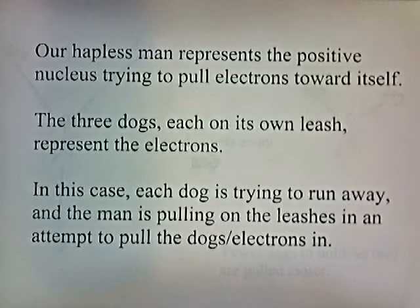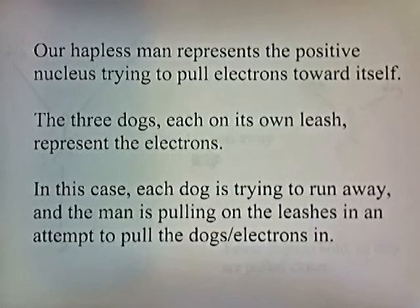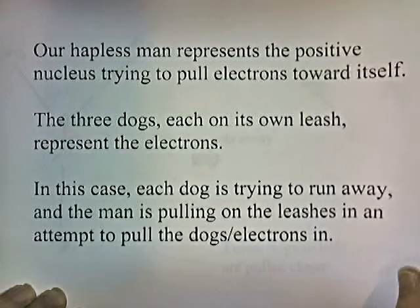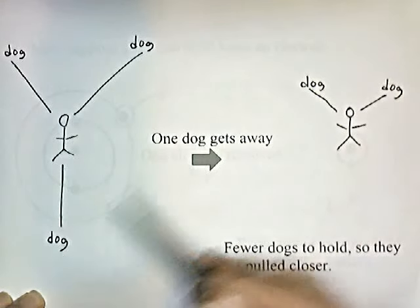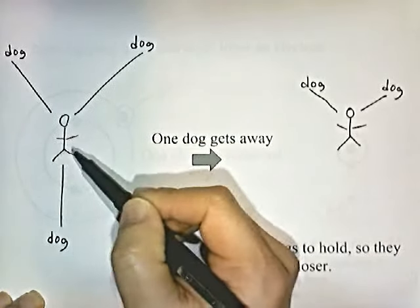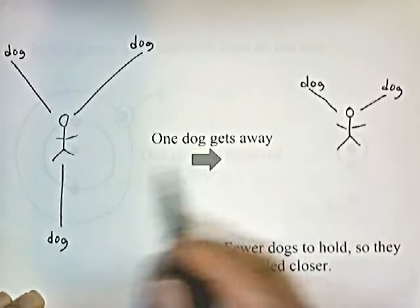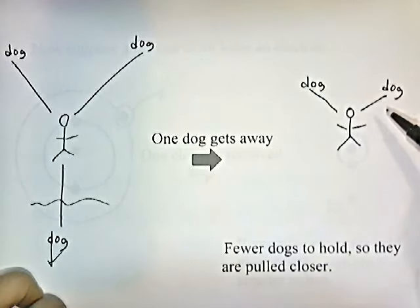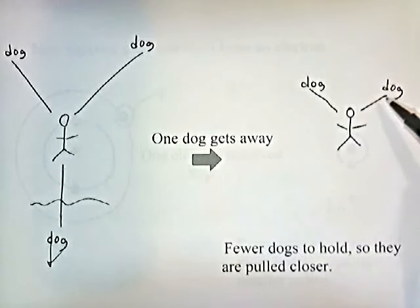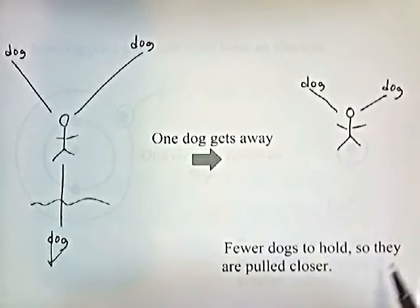Our man represents the positive nucleus trying to pull electrons towards itself, and three dogs — each on its own leash — represent the electrons trying to run away, while the man pulls on the leashes. Now let's say one dog gets away — the leash breaks and the dog runs off. Now our man is only holding two dogs. Since he's holding one fewer dog, it's easier for him to pull the remaining dogs closer to him, and in a sense the radius decreases. If there are fewer dogs for this guy to hold, he can pull them closer.